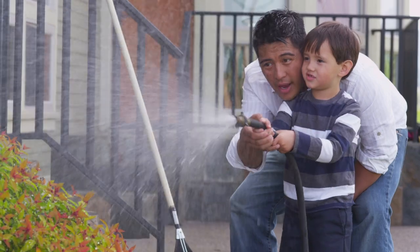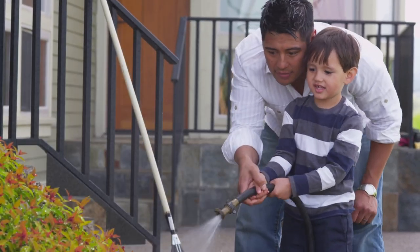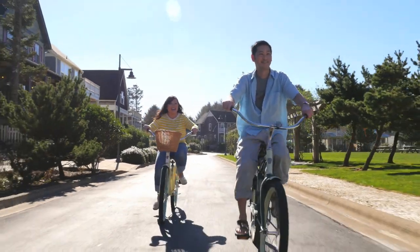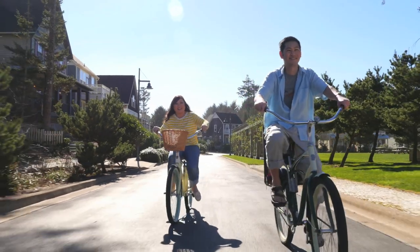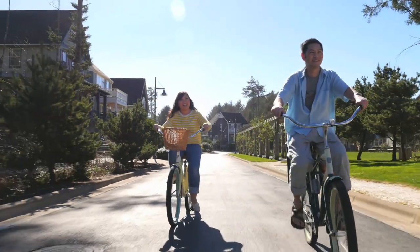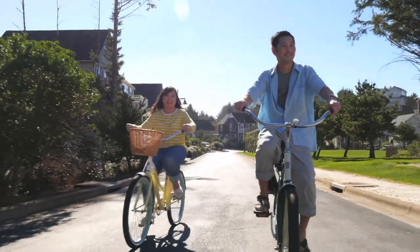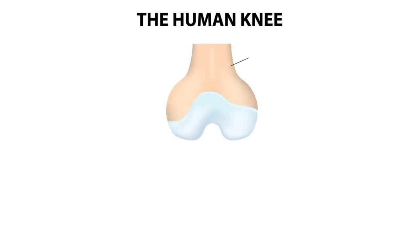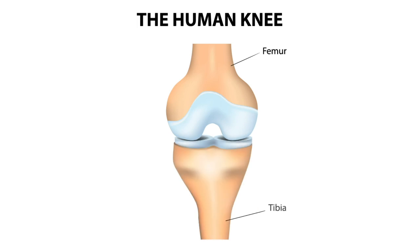Surgical options include total and partial knee replacements. In order to understand the difference between them, it is important to understand the anatomy of the knee. The knee joint is formed by three bones: the femur, or thigh bone; the tibia, or shin bone; and the patella, the kneecap.